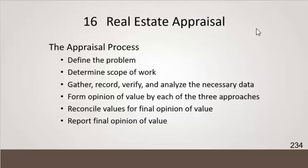Then they define the scope of work — what are we actually going to do? Then they gather all the data. There are two types: general data, which covers things about the neighborhood — is it driven by the REO market, what's the crime rate, what's the social atmosphere, is it a declining or up-and-coming neighborhood? The second type is specific data — the actual numbers on the properties, like 1,500 square feet, three bedrooms, two baths. Those are the specific data on all the target properties used in the valuation.